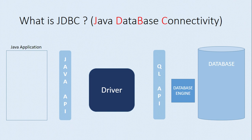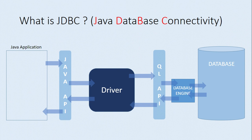With the help of the driver, the database logic written in the Java application can be communicated to the database, and the database can perform the required operation. The required output will be provided back to the Java application. These arrows show the flow of execution: the Java representation is taken by the driver, converted into query language representation, and then forwarded to the database.